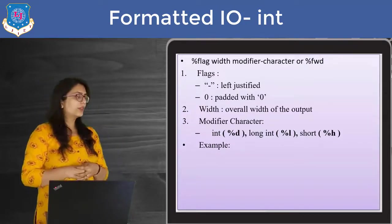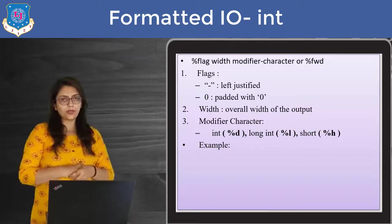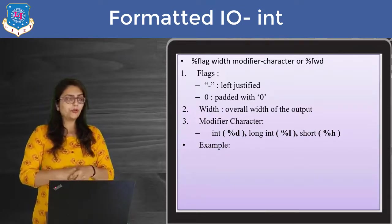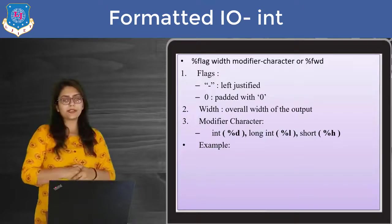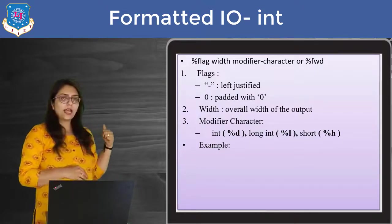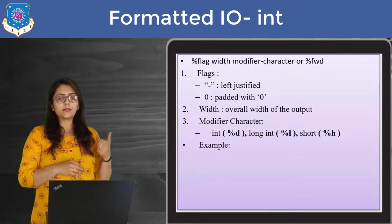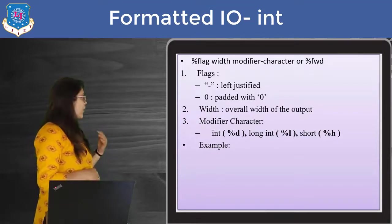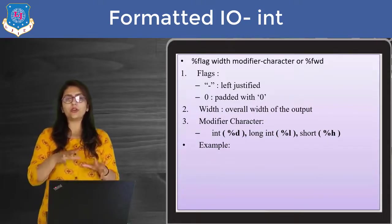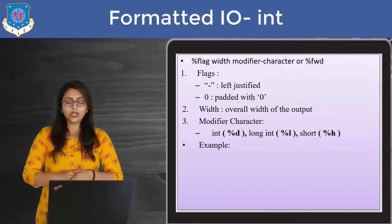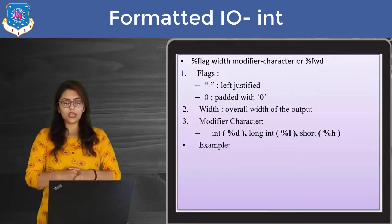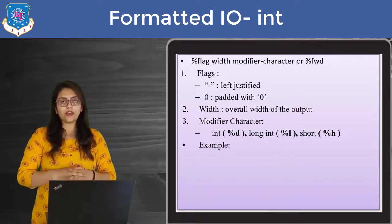I have written the general expression for formatted output. First is the % sign. After % there are flags, then there is a width, and then there is a modifier character. You can say in short: f for flag, w for width, and d for modifier characters. Now what exactly are these flags?